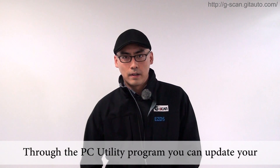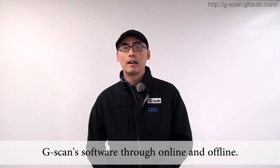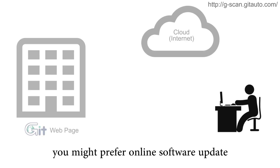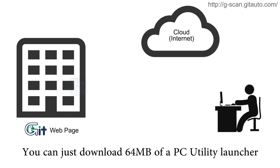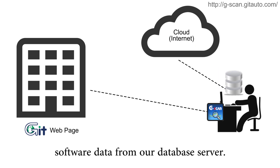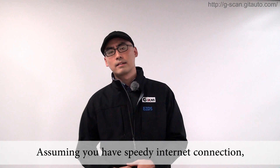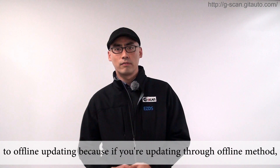Through the PC Utility Program, you can update your GSCAN software through online and offline methods. If you are in a place where internet speed is not a concern, you might prefer online software update since it's more convenient. You can just download a 64MB PC Utility Launcher from our website and download individual or entire software data from our database server.